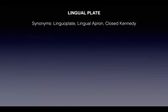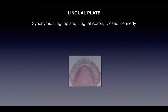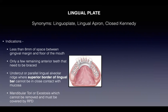The next major connector is the lingual plate (synonyms: lingual apron, closed Kennedy). Indications: less than 8 millimeters of space between the gingival margin and floor of the mouth; a few remaining anterior teeth that need bracing; an undercut or parallel lingual alveolar ridge where the superior border of a lingual bar cannot be in close contact with the mucosa; or mandibular tori or exostosis that cannot be removed and must be covered by the RPD.